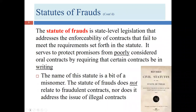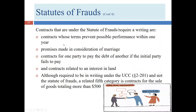You may recall in the first lecture, we talked about when the statute of frauds requires a writing. We covered contracts whose terms prevent possible performance within one year, prenuptial agreements, contracts for one party to pay the debt of another (co-signing), contracts relating to an interest in real property, and any contract for the sale of goods totaling more than $500. There are a couple of others in Texas, but you're not responsible for those for this class.